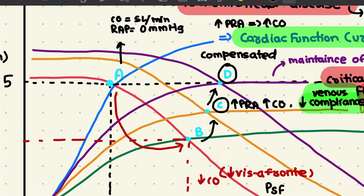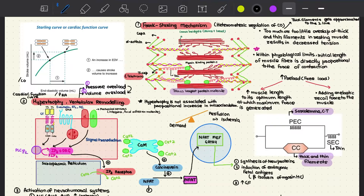Further compensation occurs through volume retention, with the heart reaching point D. A compensated heart failure is defined when the critical cardiac output level of 5 liters per minute for normal fluid balance is maintained. Through compensatory mechanisms — sympathetic outflow and volume retention via the RAS axis — we achieve compensated heart failure with preserved cardiac output, often at an elevated filling pressure.